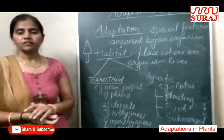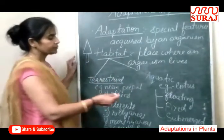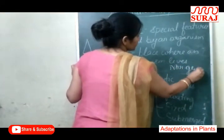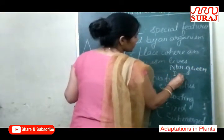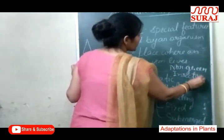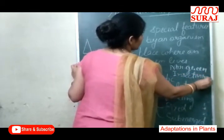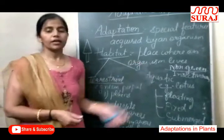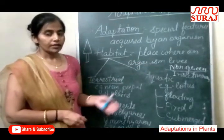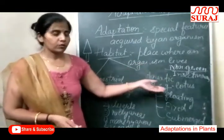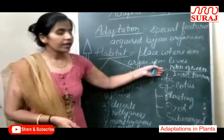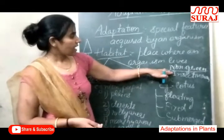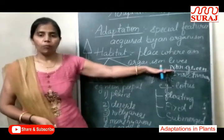Now, other than these plants, there are some other plants like Non-green plants and Insectivorous plants. Non-green plants — jo green color mein nahi hote hain — they lack chlorophyll, the green color pigment which helps in the photosynthesis process. So they obtain their food from dead and decaying matter. Examples of non-green plants are Mushrooms and Moulds.